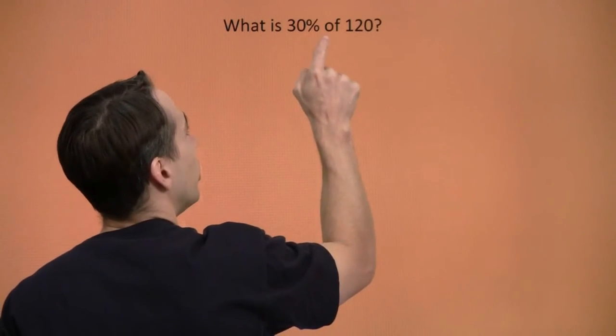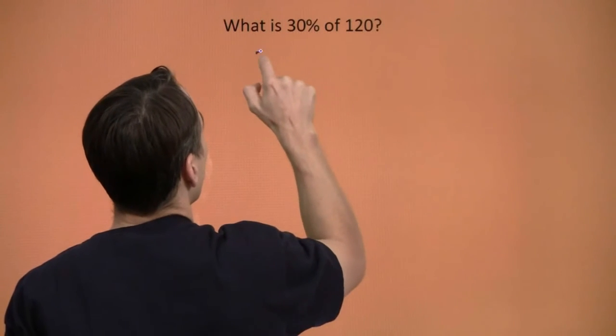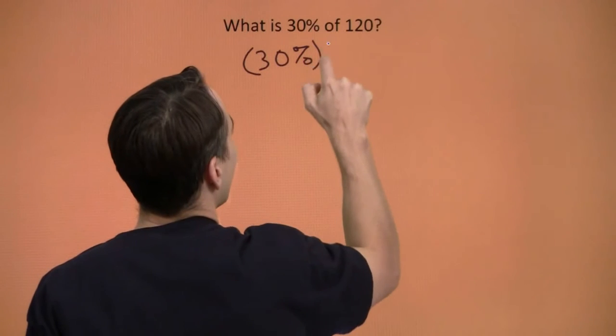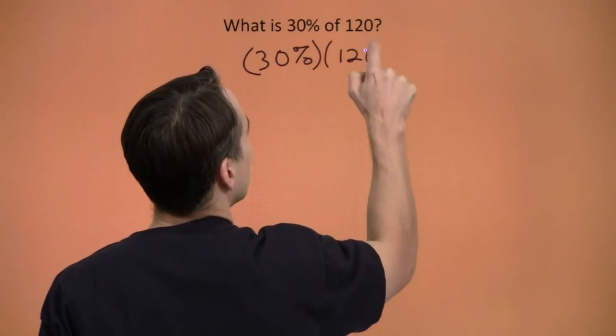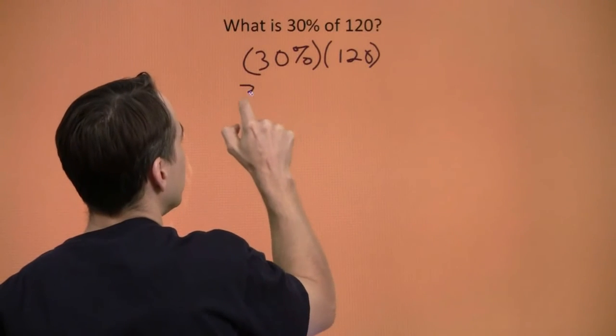What is 30 percent of 120? We know what that of means. The of means multiply. Thirty percent of 120 is 30 percent times 120. We're going to tackle this two different ways. First we're going to turn the 30 percent into a fraction.